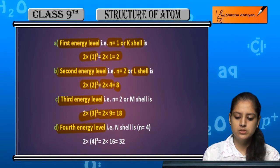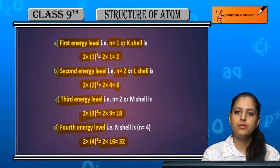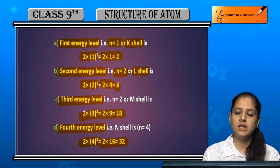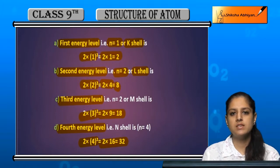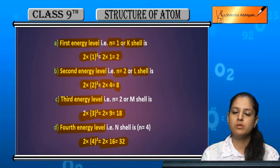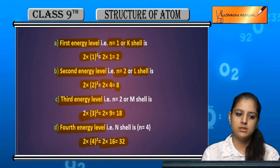Similarly, for the 4th shell: 2 into 4 squared equals 32. So summarizing: 1st shell maximum 2 electrons, 2nd shell 8, 3rd shell 18, and so on, using the formula 2n².